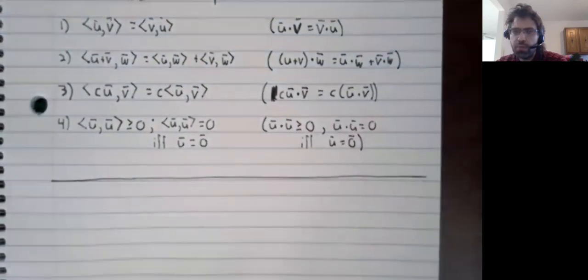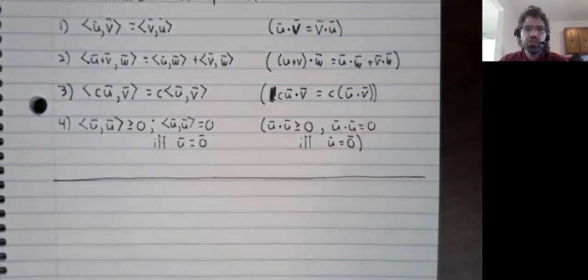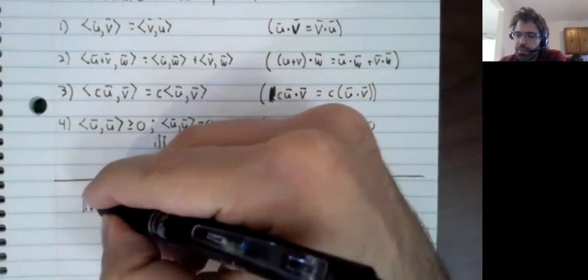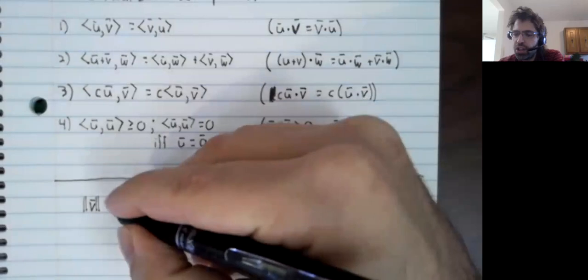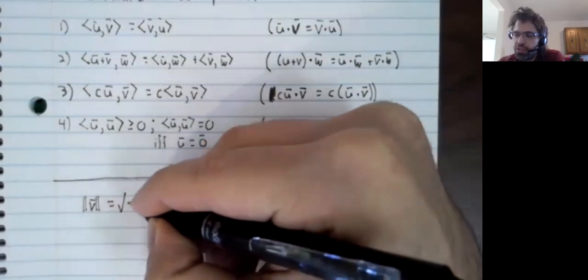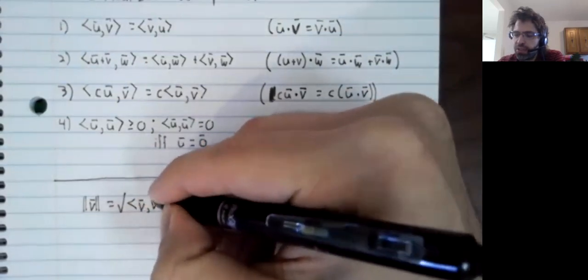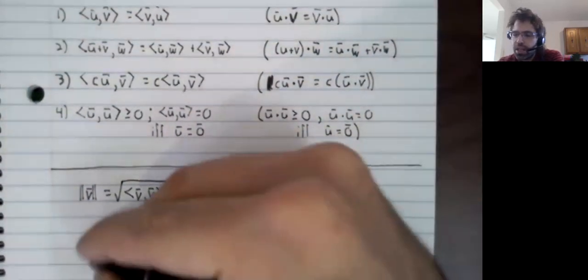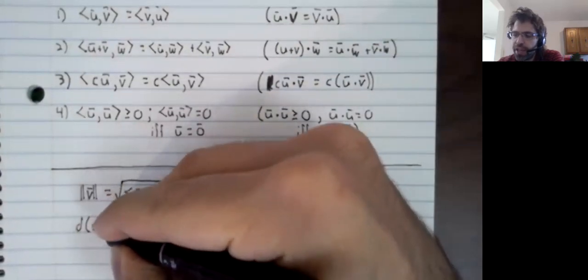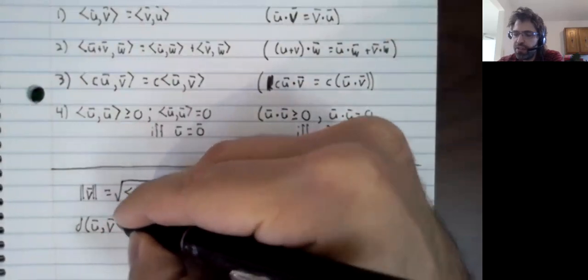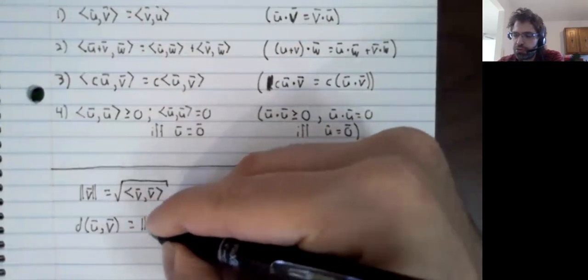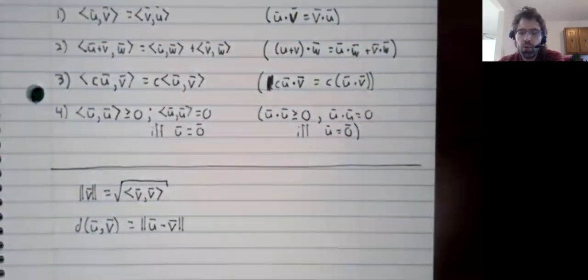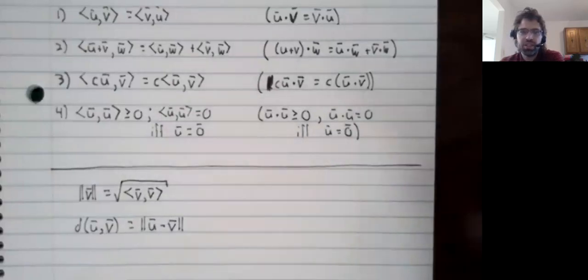Because inner products generalize dot products, if we have an inner product, we can define the norm, because the norm of a vector is defined in terms of dot products. And we can define the distance between two vectors if we have an inner product, because the distance is defined in terms of the norm, and the norm is defined in terms of the inner product.